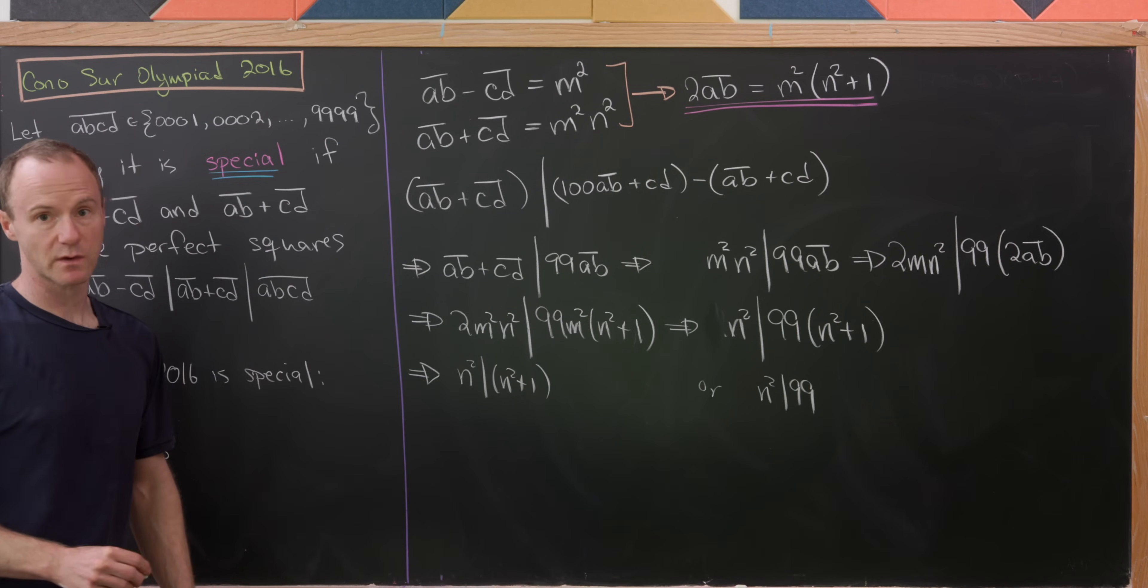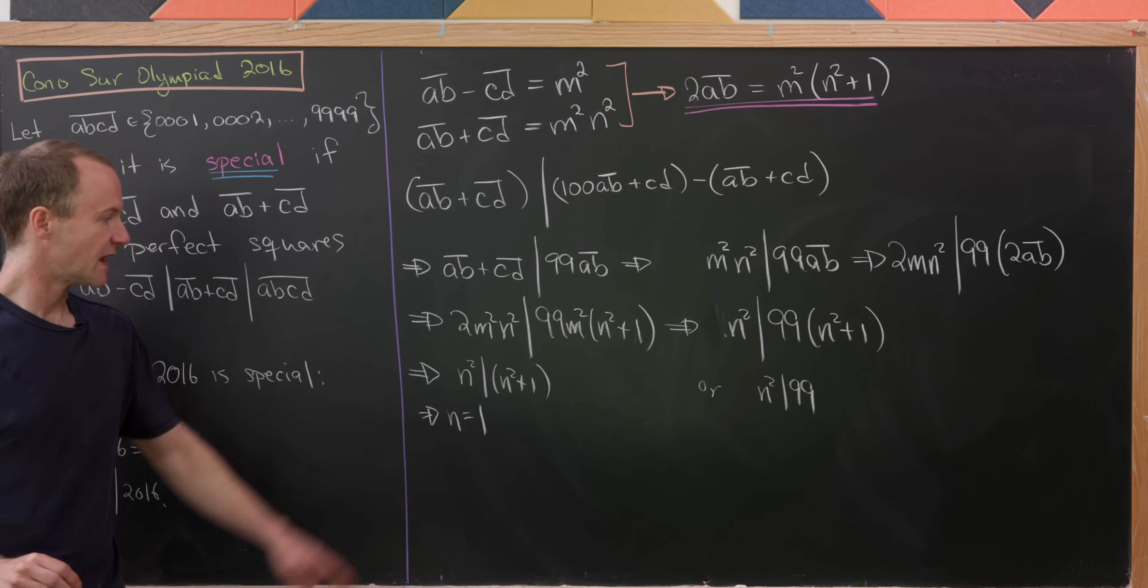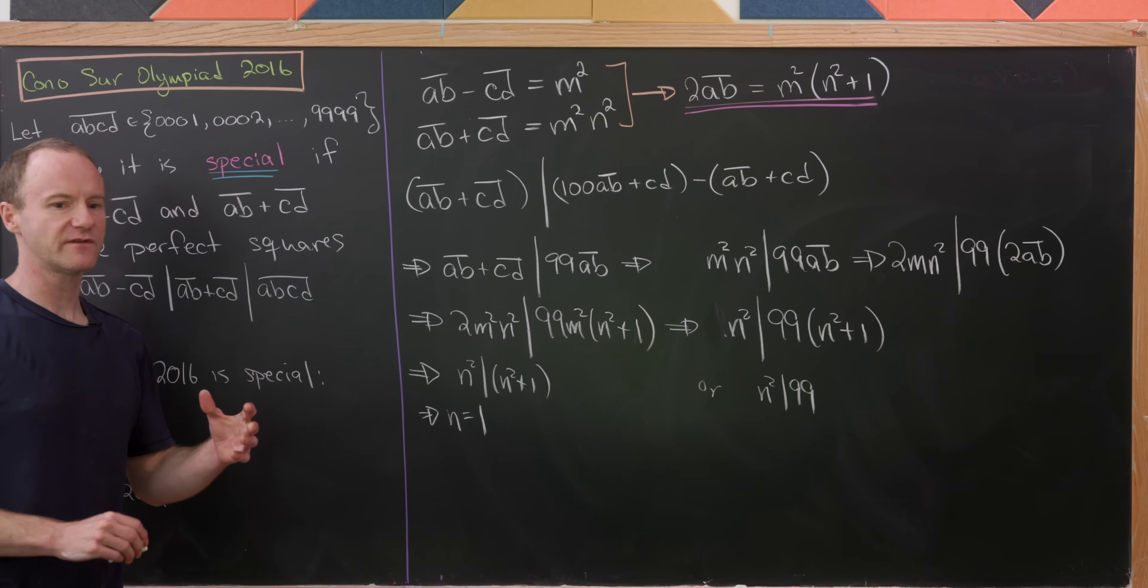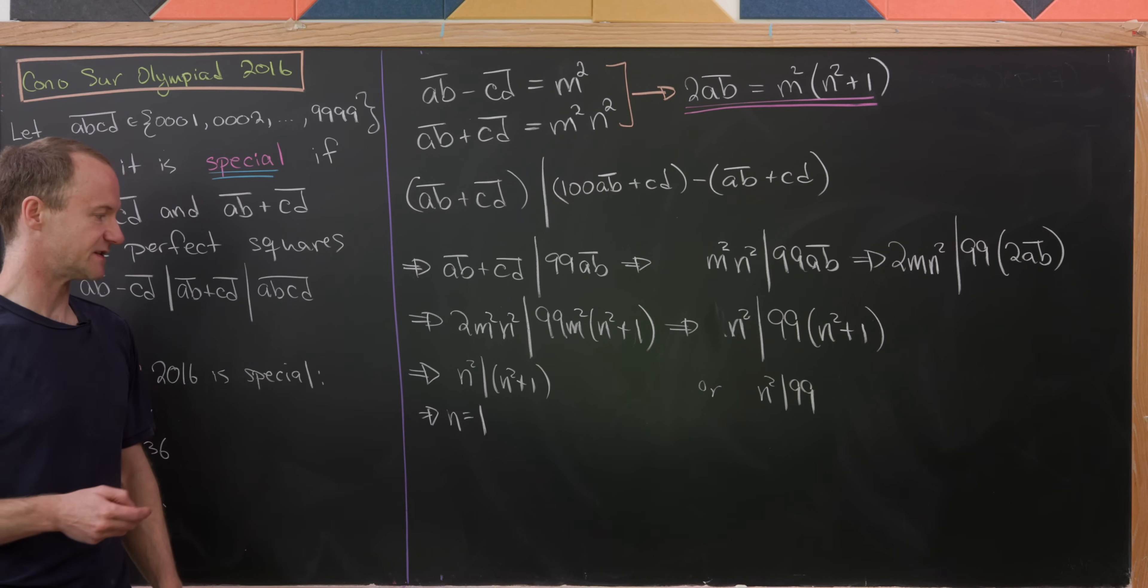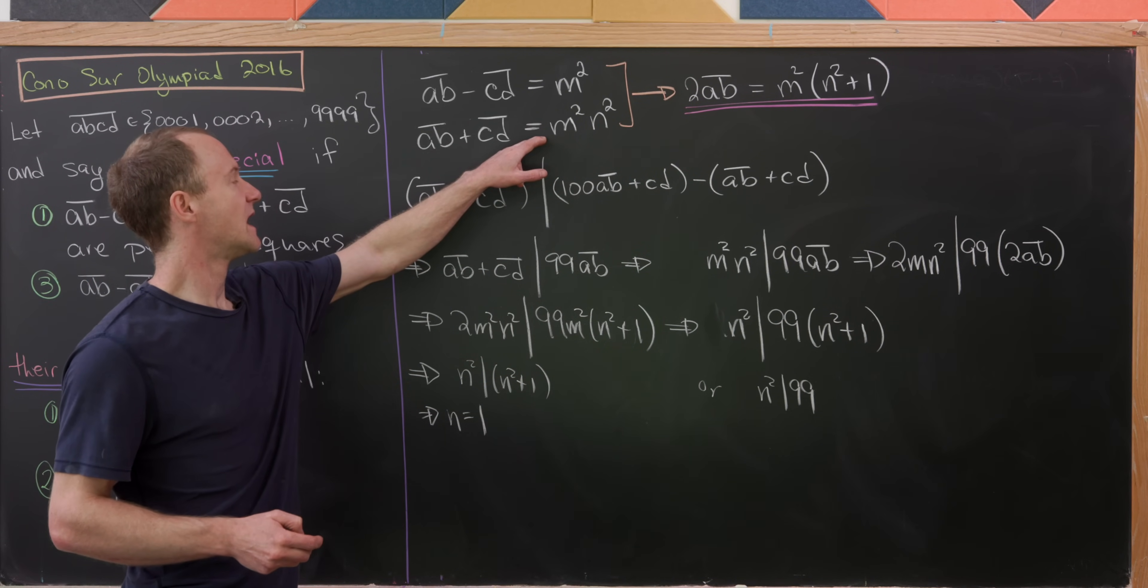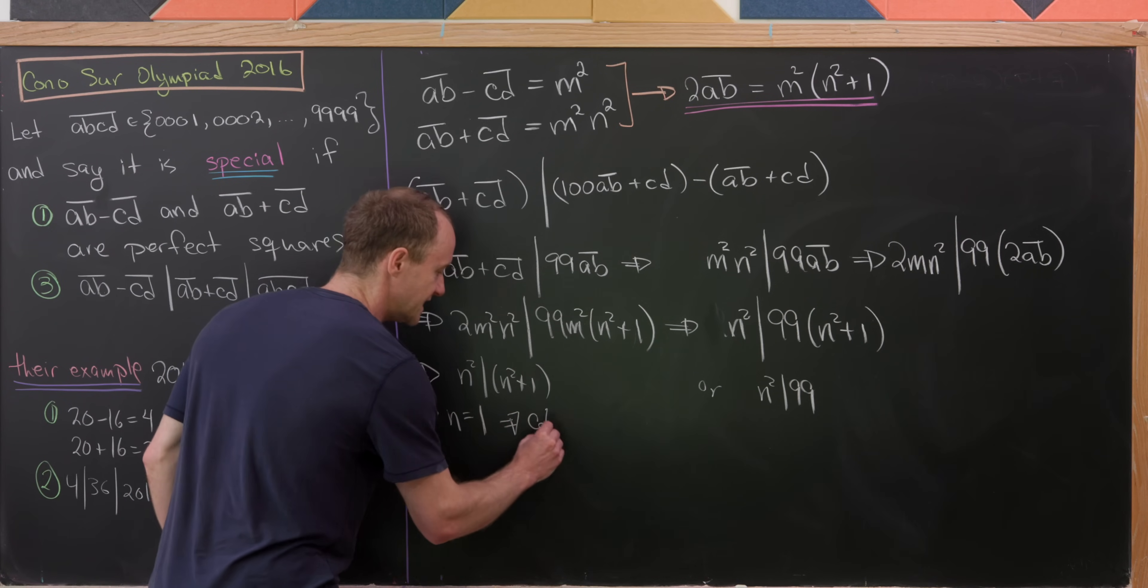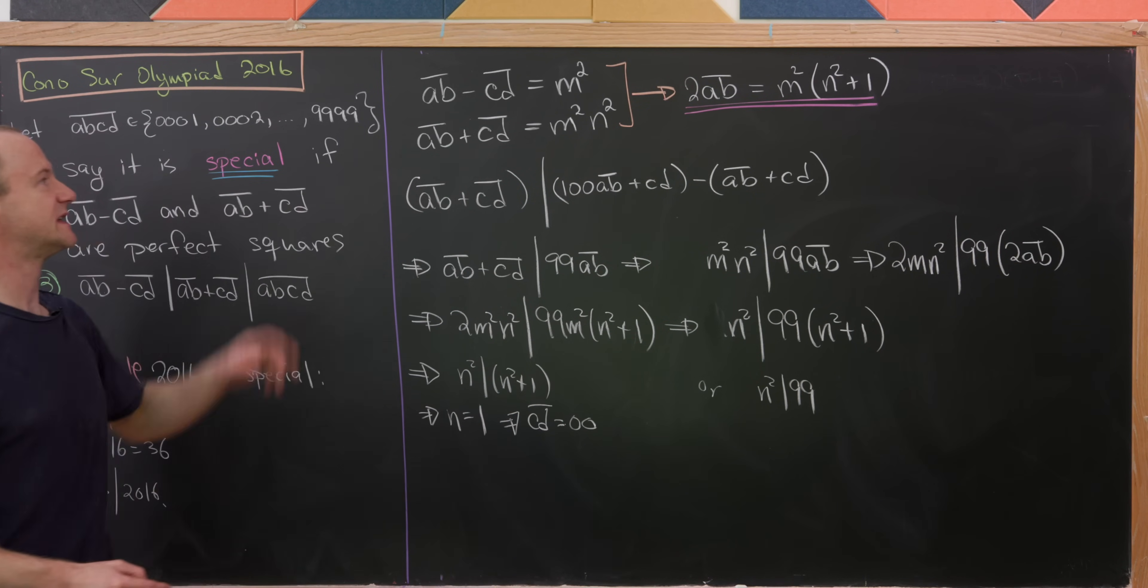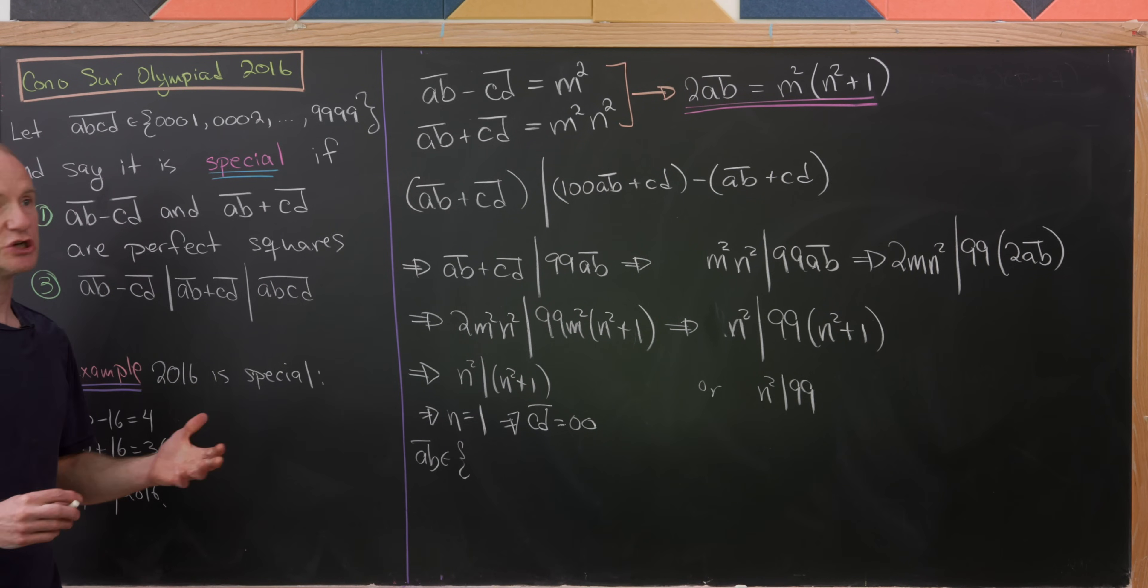The case when N squared divides N squared plus 1 is pretty boring. The only value N can be is 1, because 1 divides 2. If N equals 1, we can plug that back to see that CD must equal 00, which means AB must be a perfect square itself.